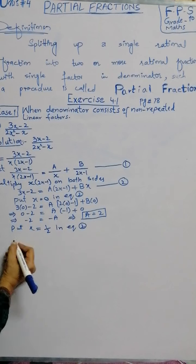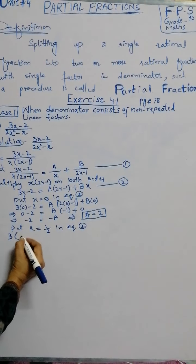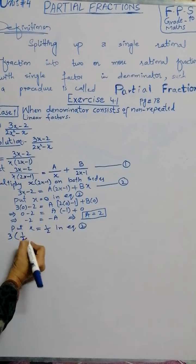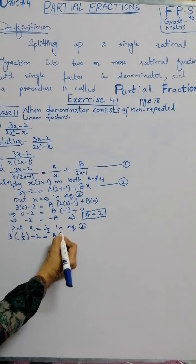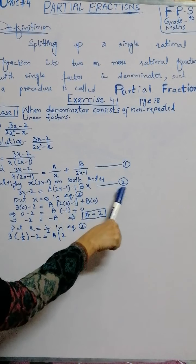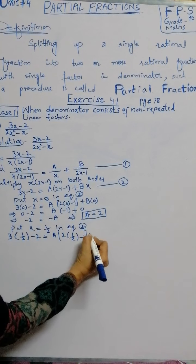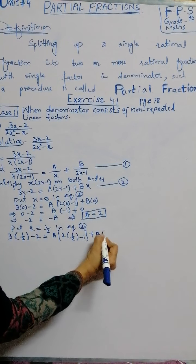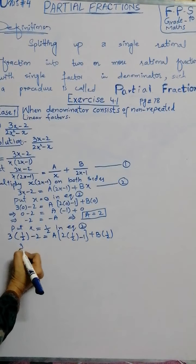We have 3 times x, so we write x's place as 1 by 2. So 3 times 1 by 2 minus 2 equals A times (2 times 1 by 2 minus 1) plus B times 1 by 2. This gives us 3 by 2 minus 2.